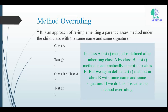Basically, method overriding is an approach of re-implementing a parent class's method under the child class with the same name and same signature. Here we define class A and class B. Both classes have a test method with the same name and same signature, and class B inherits class A.